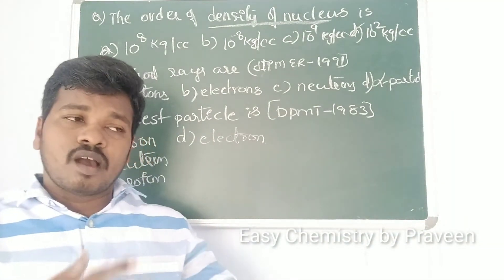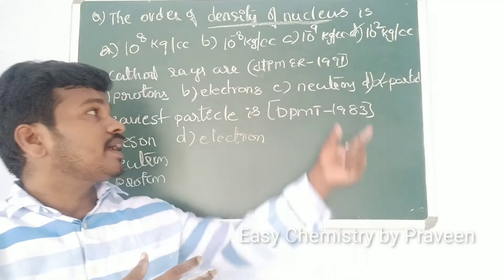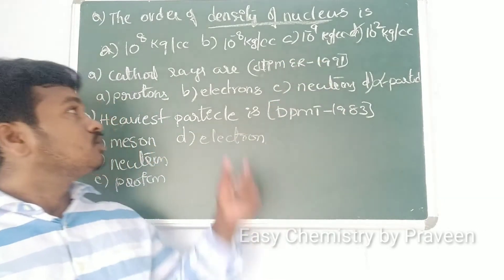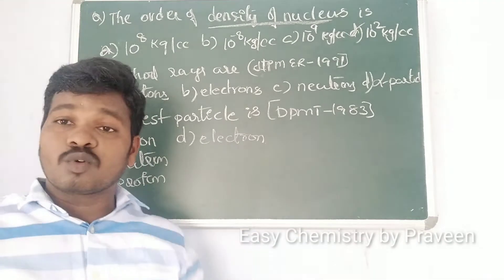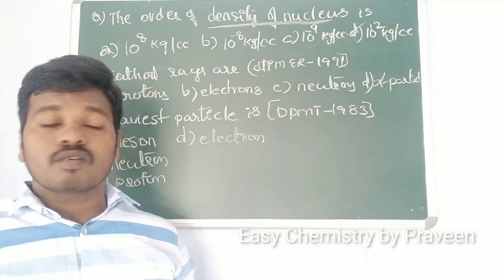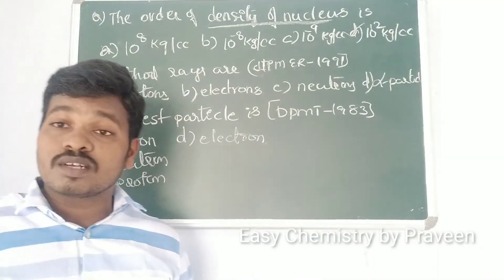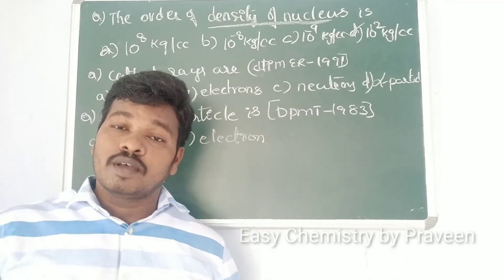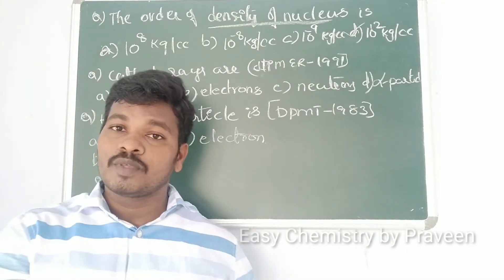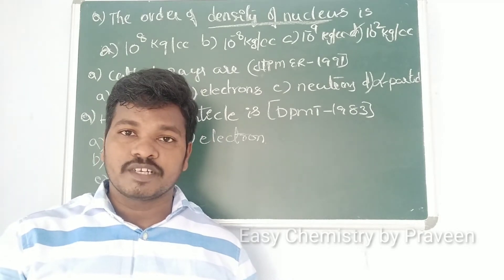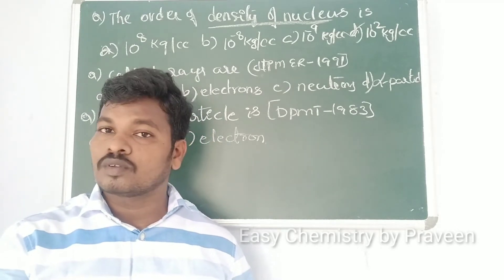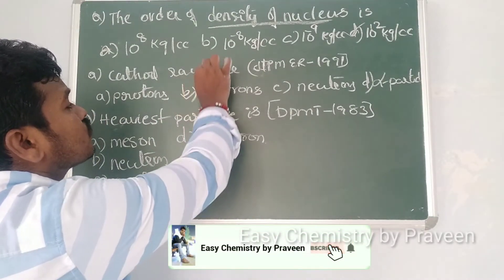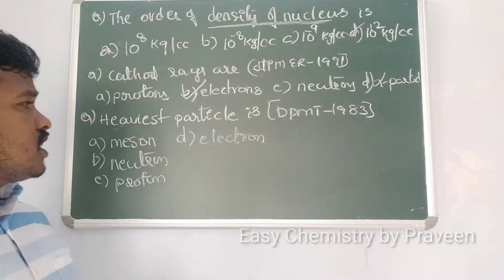This question was asked in JIBMAR 1991: what are cathode rays — protons, electrons, neutrons, or alpha particles? We know the discovery of electrons came through the discharge tube experiment, that is the cathode ray discharge tube experiment. So cathode rays are negatively charged particles, which is why we call them electrons.